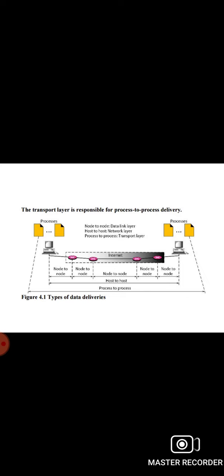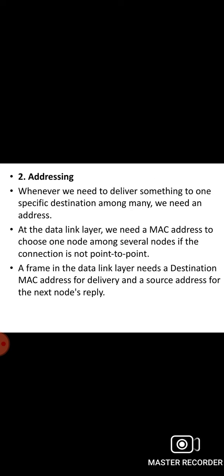There are some exceptions to this rule — for example, there are clients that are assigned well-known port numbers. Every client process knows the well-known port number of the corresponding server process. For example, while the daytime client process can use an ephemeral (temporary) port number such as 52000 to identify itself, the daytime server process must use the well-known port number 13.